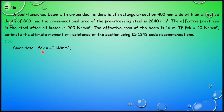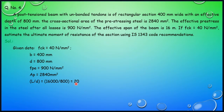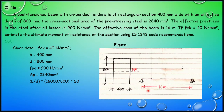Noting down the given data from the question. The L/D ratio comes out to be 16,000 divided by 800 mm, which is 20. Imagining the figure for this question: breadth is 400 mm, depth is 800 mm, and total span is 16 meters.